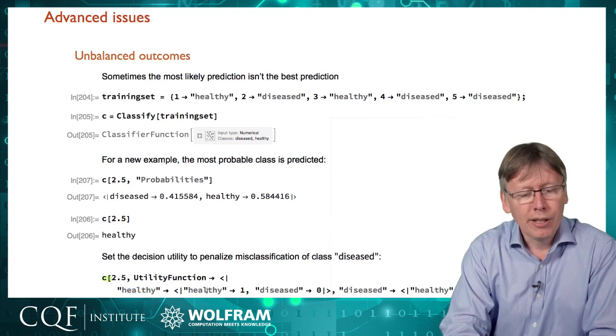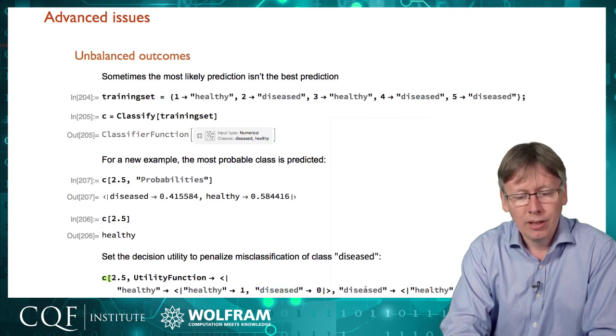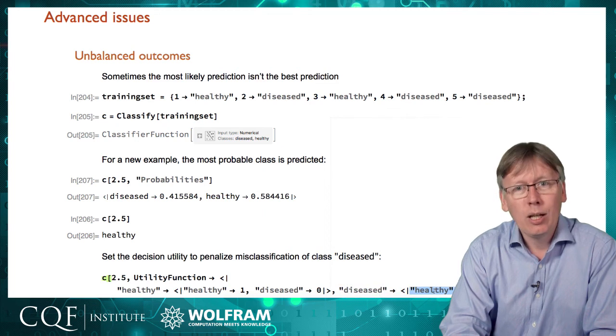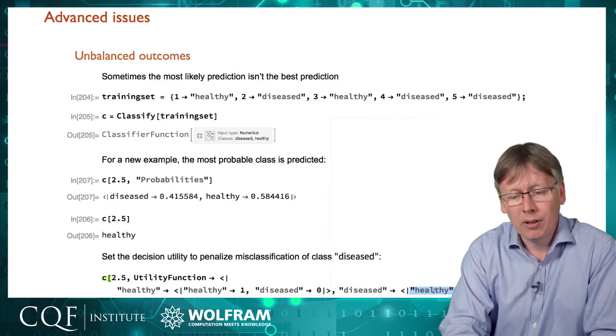If they're healthy then we're going to give the system one point for getting it right and no points for getting it wrong but if the person is actually diseased we're going to punish the system for making a healthy prediction and we'll give it a point for getting it right.